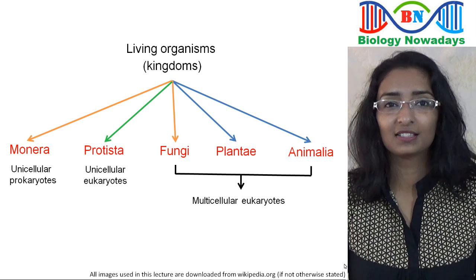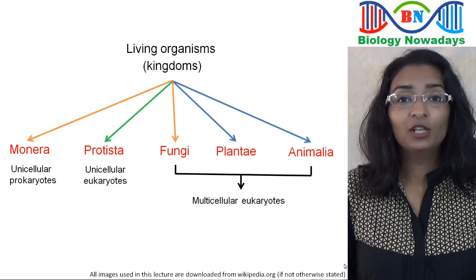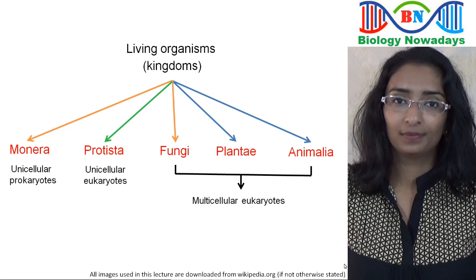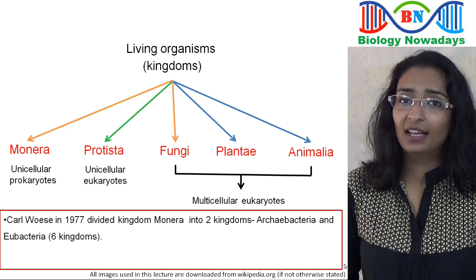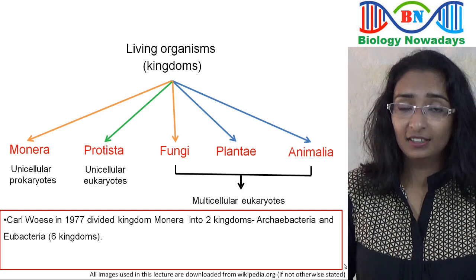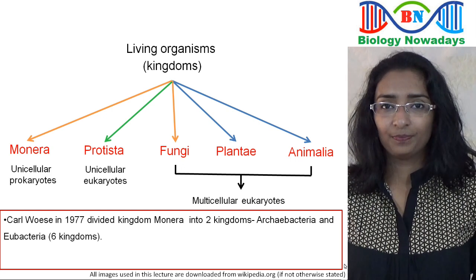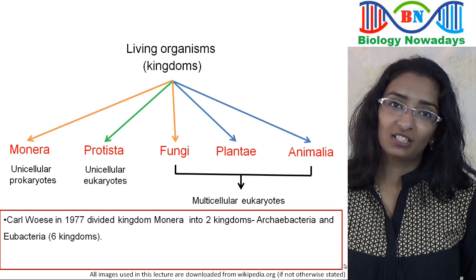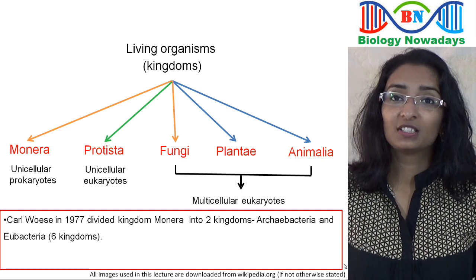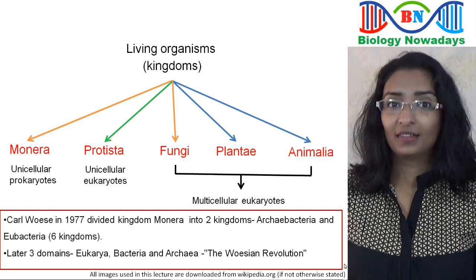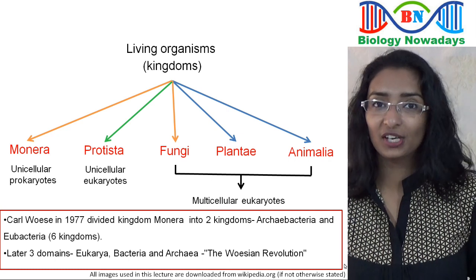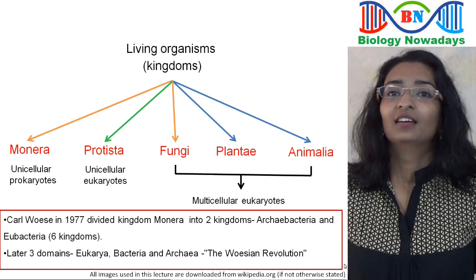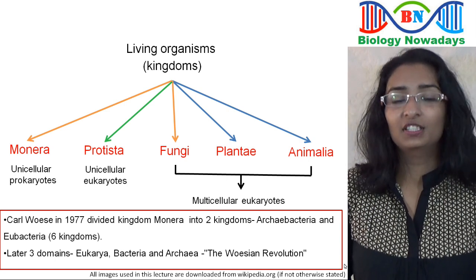We will be following Whittaker's five-kingdom classification in this lecture. Before we go into detail on each kingdom, an important addition: in 1977, American scientist Carl Woese divided kingdom Monera into two kingdoms — Archaebacteria and Eubacteria — and proposed a six-kingdom classification system. Later, he proposed three domains of life: Eukarya (consisting of kingdoms Fungi, Plantae, and Animalia), domain Bacteria, and domain Archaea — which is now called the Woesian revolution.